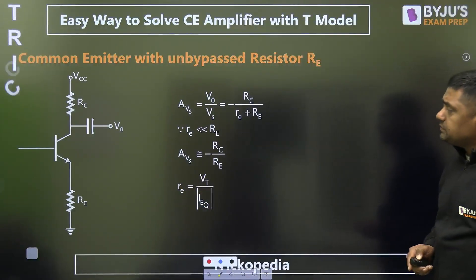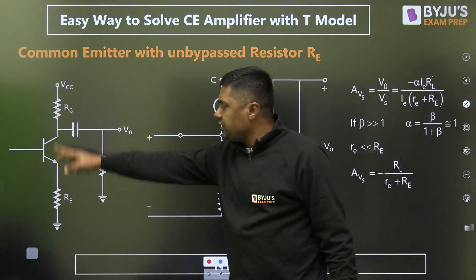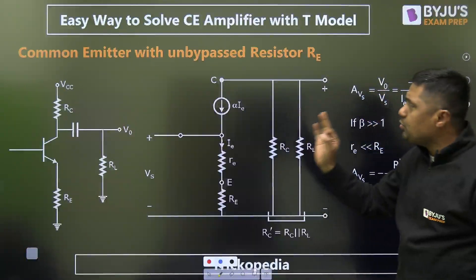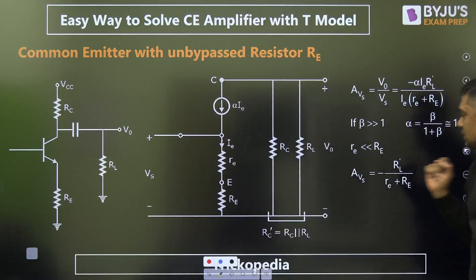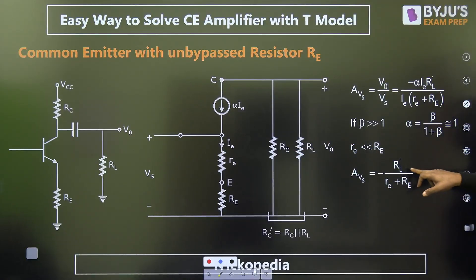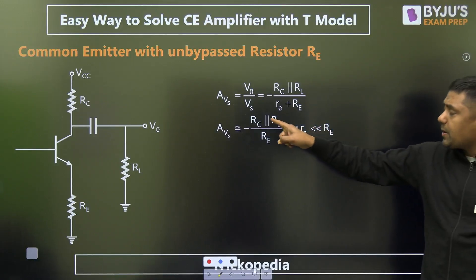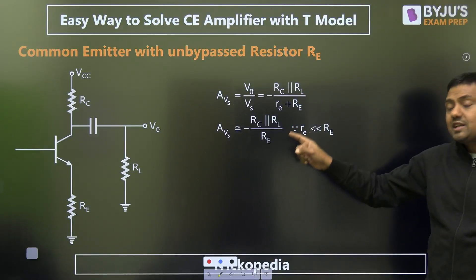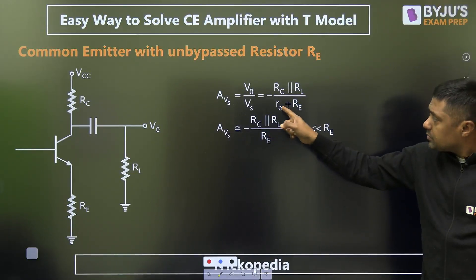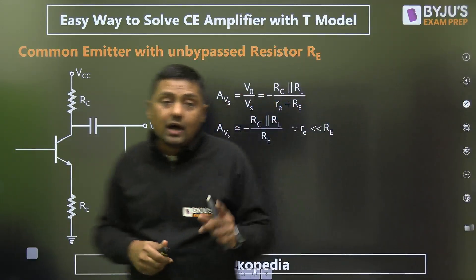Second diagram: when RL is present, everything remains the same — VCC tends to 0. Simply replace RC by RC parallel with RL, which we call RL dash (RL' = RC ∥ RL). Small re is negligible, so the approximate gain is minus (RC ∥ RL) upon capital RE. For the exact gain, use small re plus capital RE in the denominator. This is again very important for the case when RL is present.